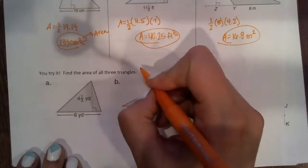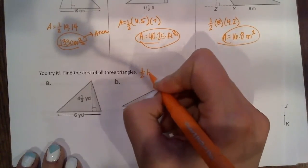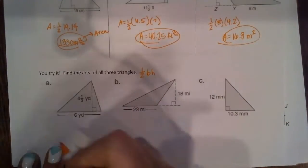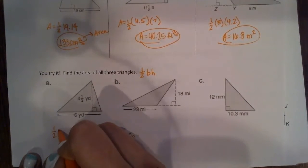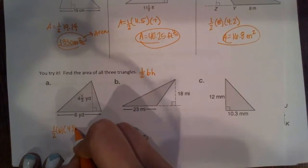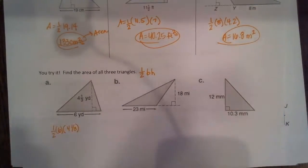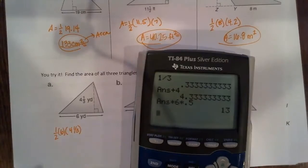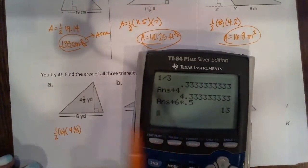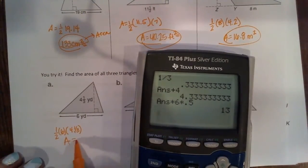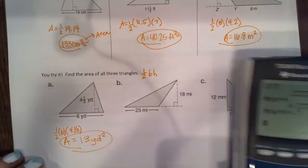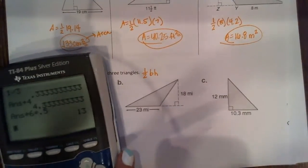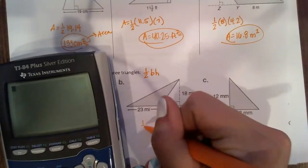So we have, I'm going to write our formula up here again so we don't forget. One-half base is 6, height 4 and one-third. For the reason I cannot figure out how to get this fraction into my calculator, so I didn't like this. I get my area to be 13 yards squared, and squared because it's area.